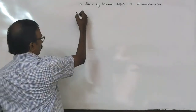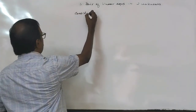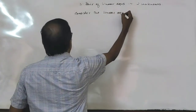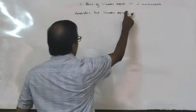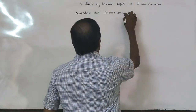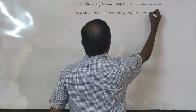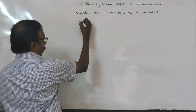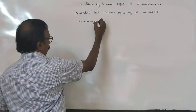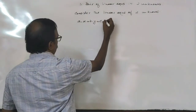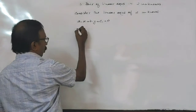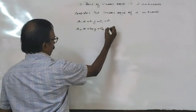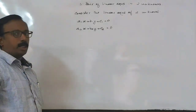Consider the linear equations of two unknowns: a1x plus b1y plus c1 is equal to 0, and a2x plus b2y plus c2 is equal to 0. Here a1, a2, b1, b2, c1, c2 are real numbers.